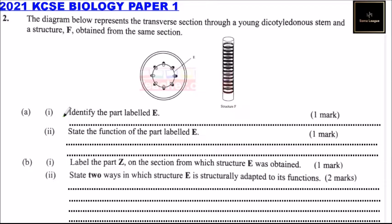Part A, roman numeral one: identify the part labeled E. So this is the part labeled E. That part is known as cambium, or you can also call it vascular cambium.